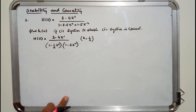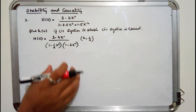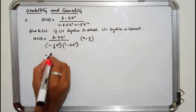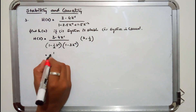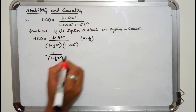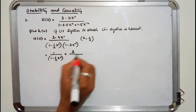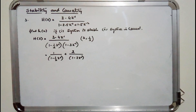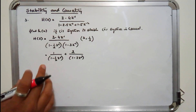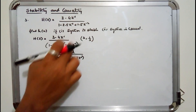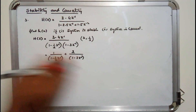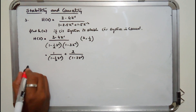Applying partial fractions, H(z) can be written as 1/(1 − (1/2)z⁻¹) + 2/(1 − 3z⁻¹). The partial fraction method gives two terms: A divided by the first factor plus B divided by the second factor; substituting values of z⁻¹ yields these coefficients.